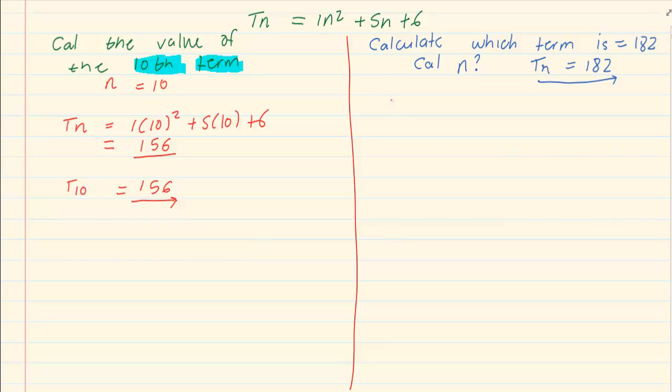If we go to the formula, we would have tn is equal to 1n squared plus 5n plus 6. We know that tn is equal to 182. So I have 182 is equal to n squared plus 5n plus 6. If we have to solve for an unknown, we know that it is a quadratic because it is to the power of 2, which means that we have to make it equal to 0.